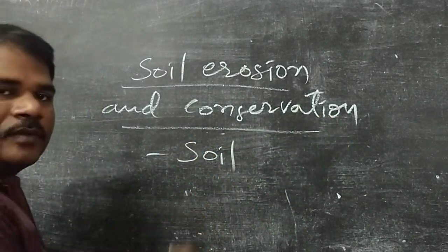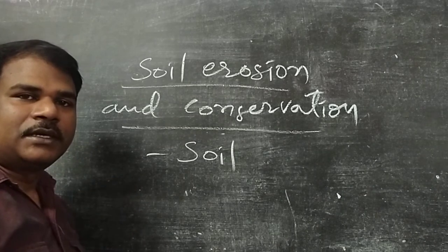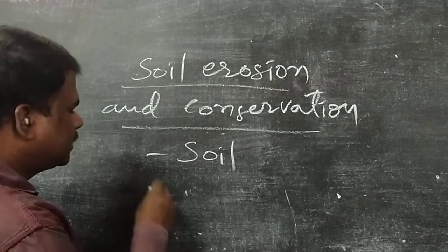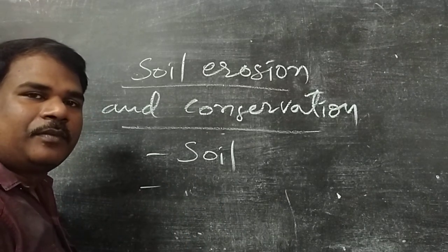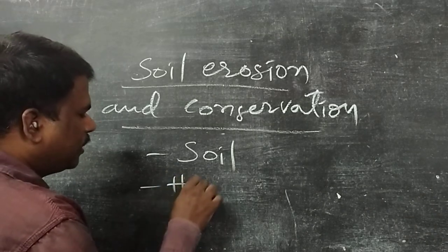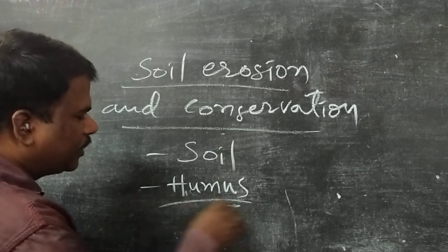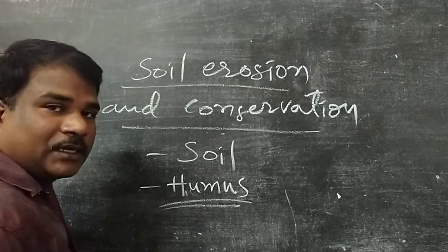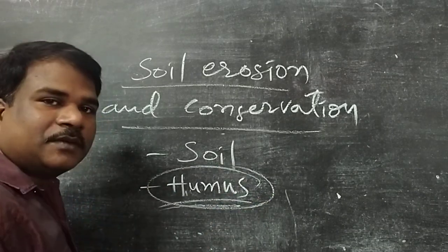Soil means it is having smaller particles of rocks and silt, pebbles, and stones. Other things are also present — whatever remains of plants and animals — it is called humus. Humus is very important to grow plants, and nutrients are present in the humus. Humus is present in the top layers of soil.